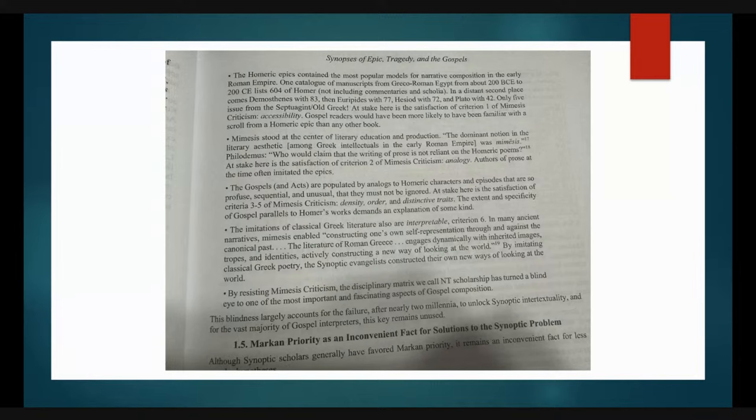Mimesis stood at the center of literary education and production. The dominant notion in literary aesthetic among Greek intellectuals in the early Roman Empire was Mimesis. At stake here is the satisfaction of criterion two: analogy. Authors of prose at the time often imitated Homeric epics. The Gospels and Acts are populated by analogs to Homeric characters and episodes that are so profuse, sequential, and unusual that they must not be ignored. This satisfies criteria three to five: density, order, and distinctive traits.